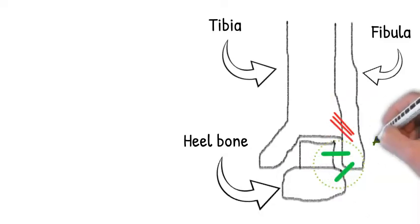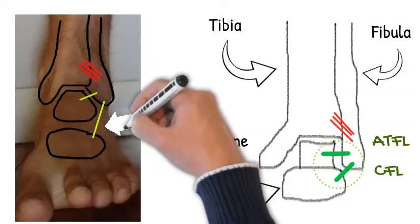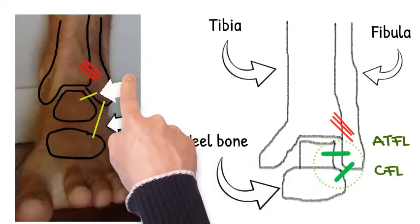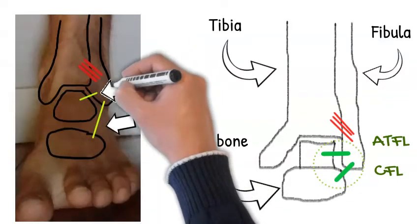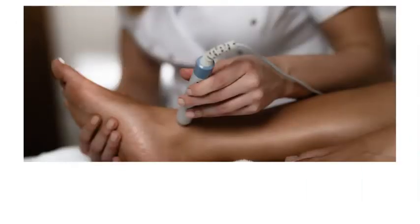The ligaments involved in an ankle sprain are known as the ATFL and CFL, marked in green there. On an actual ankle you can see them once again marked in fluoro green — that's the ATFL and CFL. These are the ligaments you injure in what's called a low ankle sprain, or common ankle sprain, when you roll your ankle towards the middle of your body.